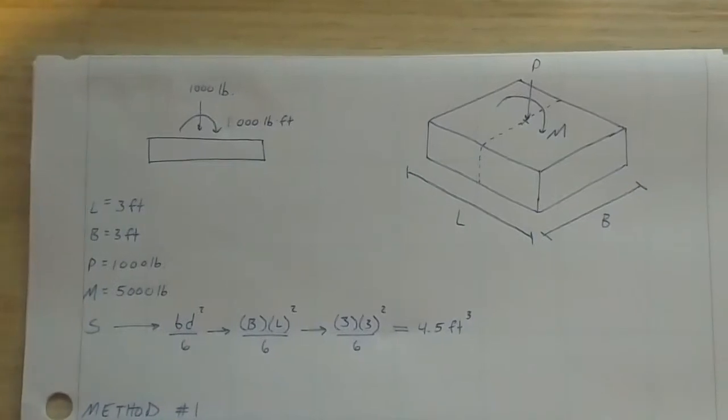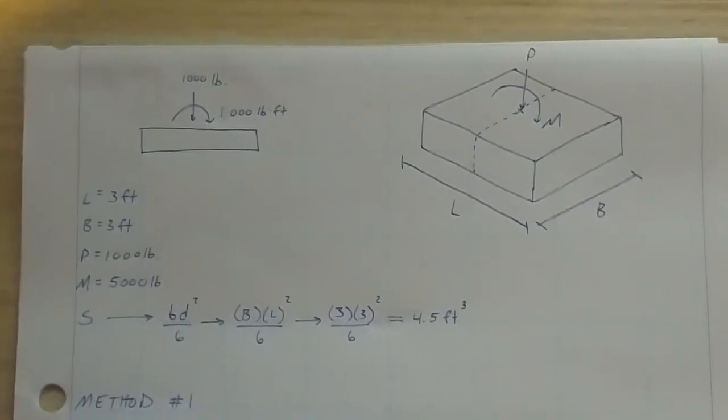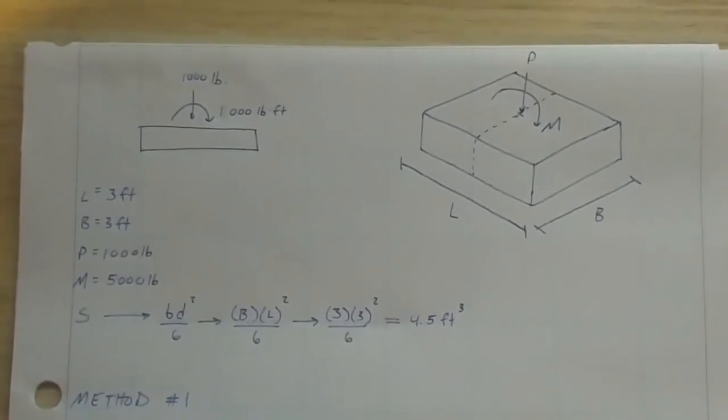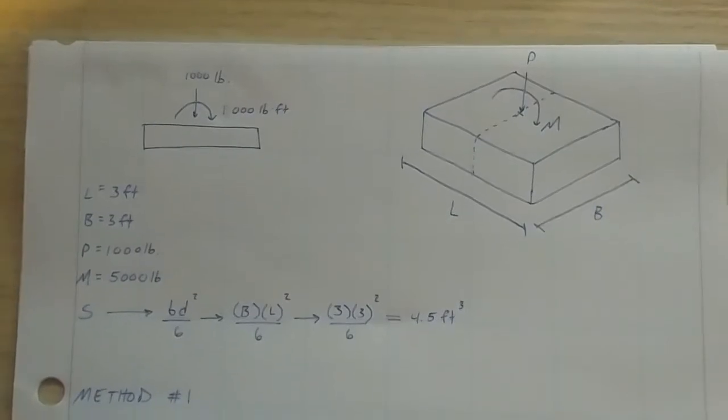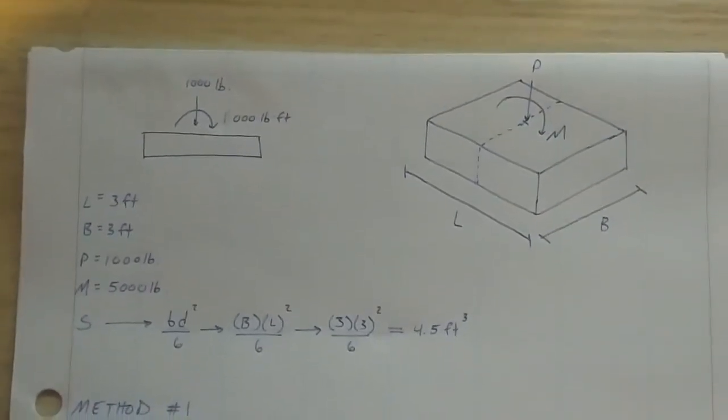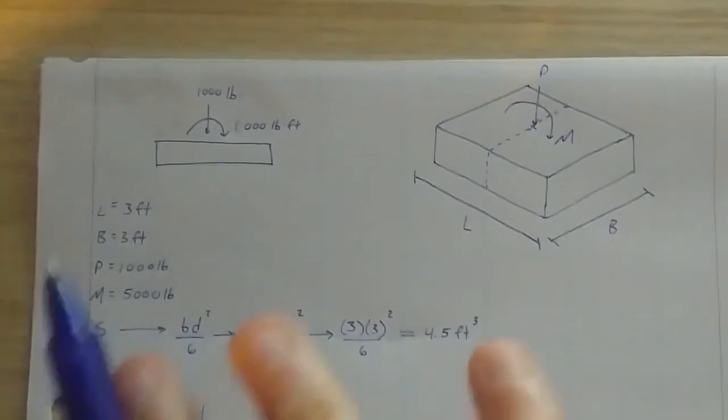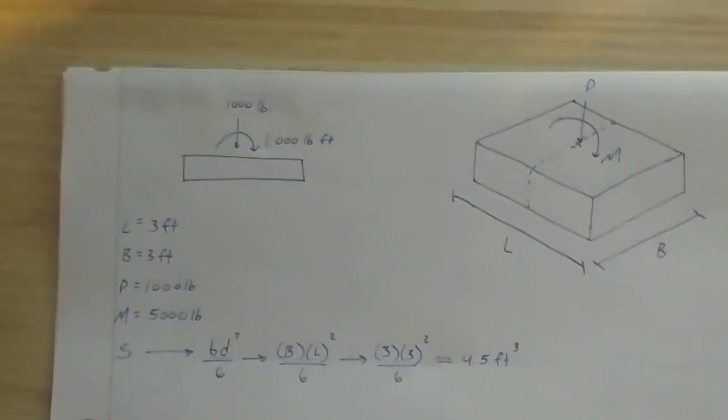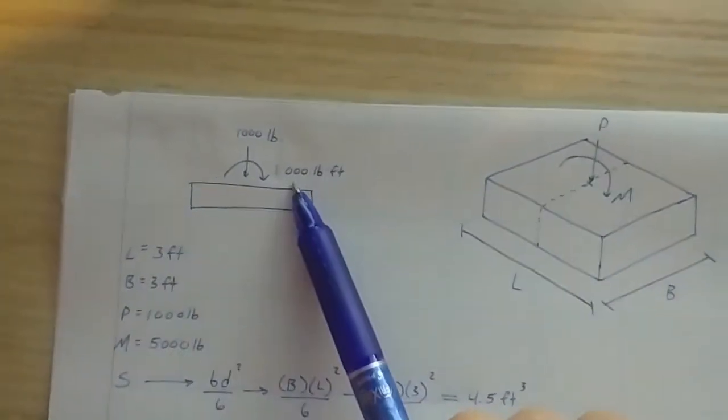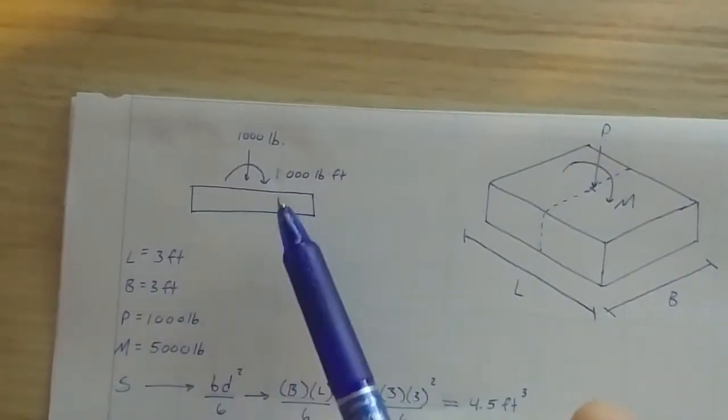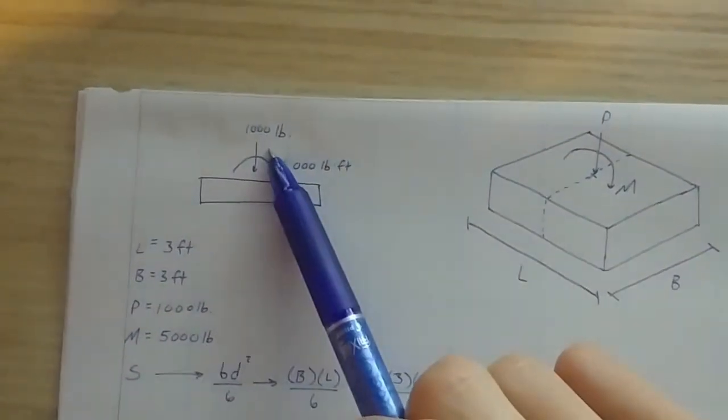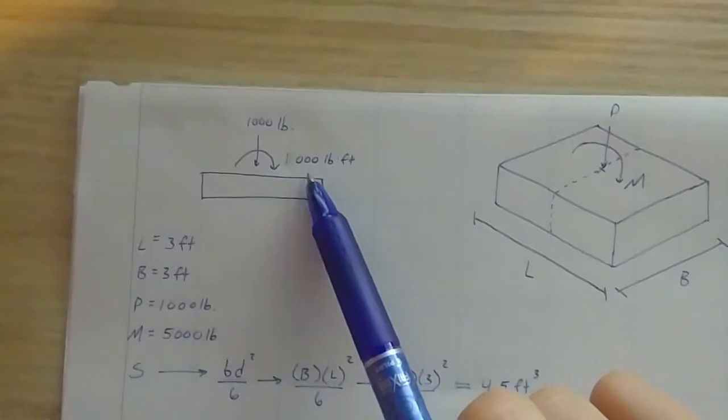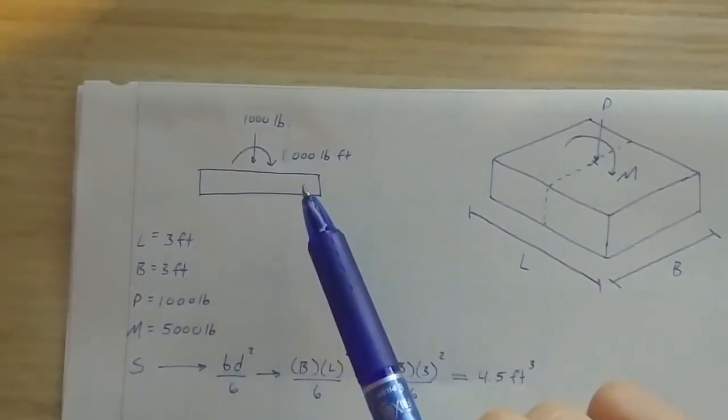So in this episode, we now have what happens when our eccentricity is greater than L over 6 and what happens when our M over S is greater than P over A. So let's jump into it. We have the same foundation that we did in the previous example, we've just changed the loading criteria. So this time, we now have a 1,000 pound-foot moment acting about the center of the footing. We still have that 1,000 pound vertical force, but instead of 100 pound-feet, we now have 1,000 pound-feet. So 10 times the amount of moment being cranked into this footing.